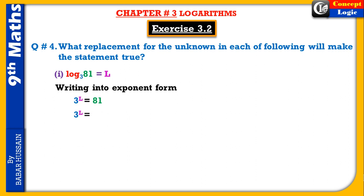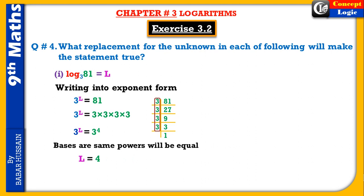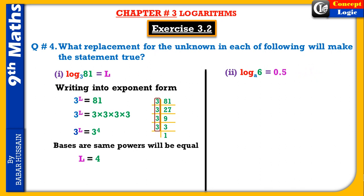81 کی prime factorization کریں گے: 81 = 3 × 3 × 3 × 3 = 3⁴۔ 81 کی جگہ 3⁴ لکھ دیں — تو 3^l = 3⁴۔ دونوں طرف same base ہے اور numbers equal ہیں، تو powers بھی equal ہوں گی — l = 4۔